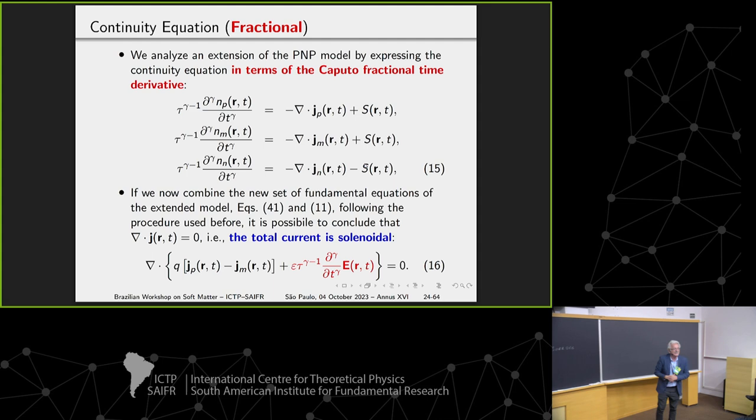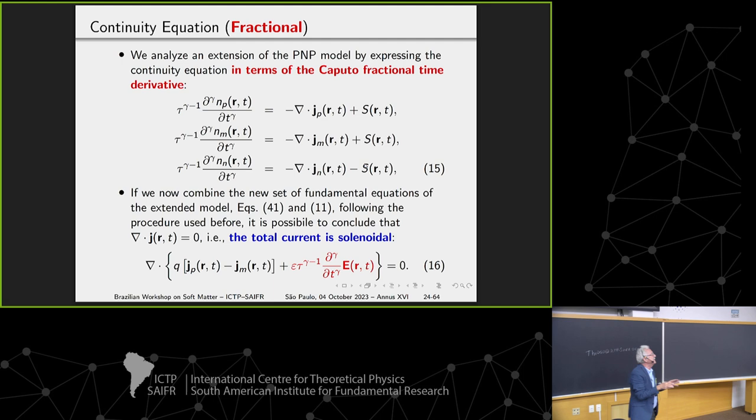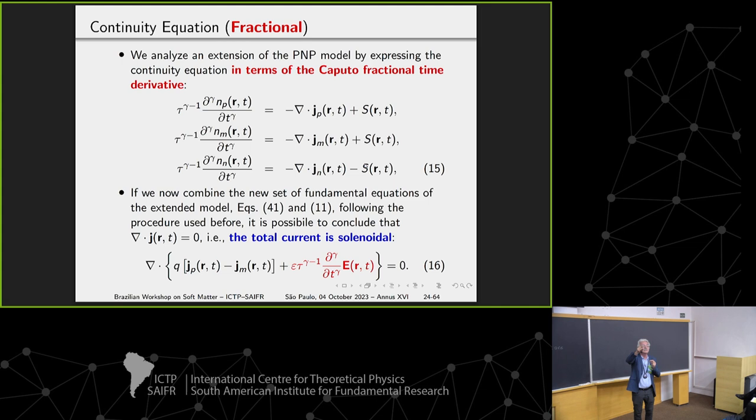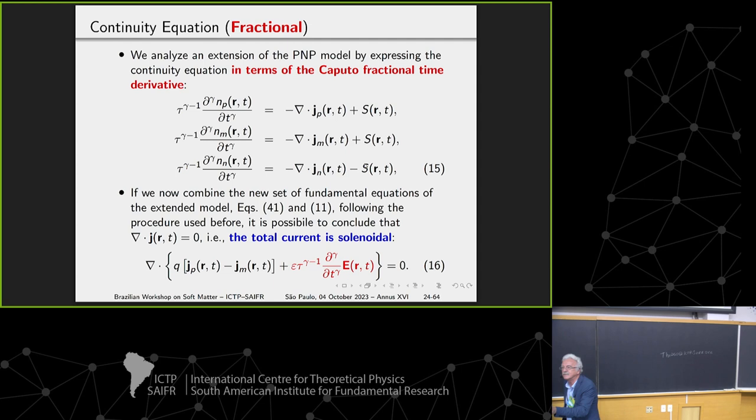It's not the only way. We can do this modifying only the conduction current, putting the fractional part on the conduction current. Why we can do this? We can do this because Fick's law is phenomenological; it's not fundamental like Maxwell's equations.